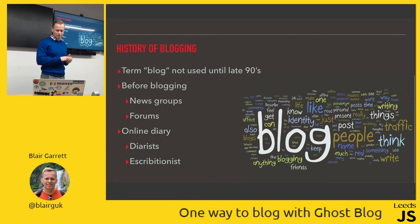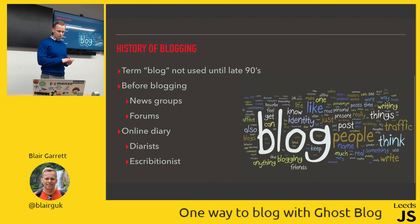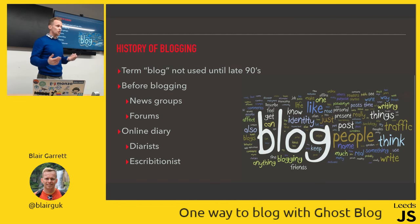News forums originated in the 1970s in a primitive form, and then the web-based ones came in 1994. They became virtual communities across various interests and topics like technology, sports, music, fashion, religion, etc. And then other ways people used to blog were online diaries, which allowed people to write about their day-to-day experiences and social commentaries — referred to as diaries or escriptionists.